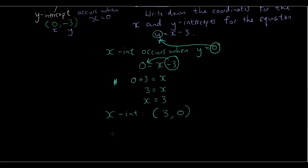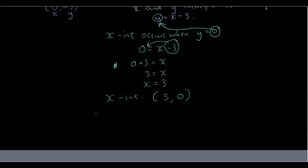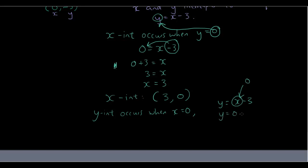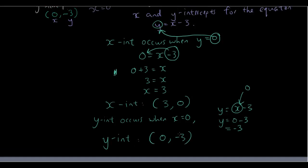Now let's look at the y intercept. The y intercept occurs when x is equal to 0. So in the equation y equals x minus 3, we substitute 0 in for x: y equals 0 minus 3, so y equals negative 3. The y intercept is (0, negative 3). We have found both the x and the y intercepts without drawing the straight line.